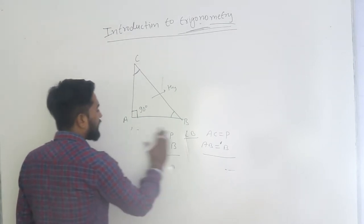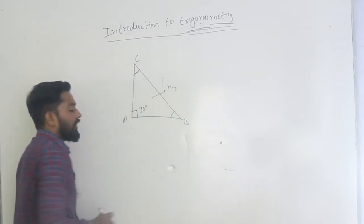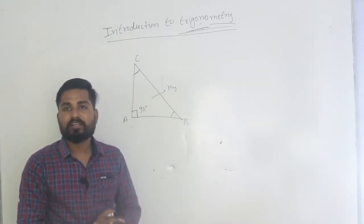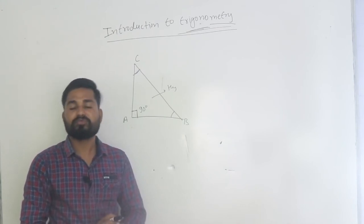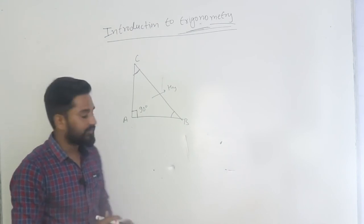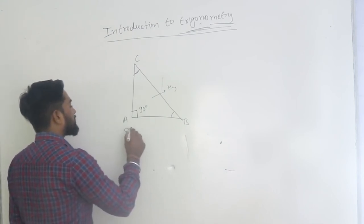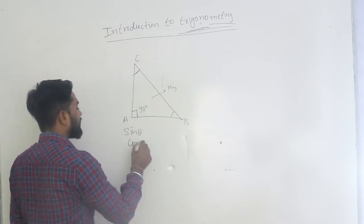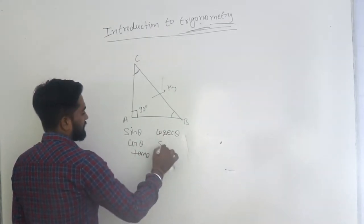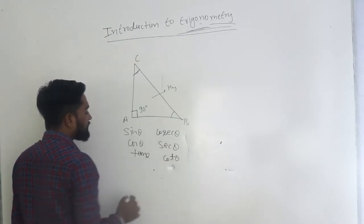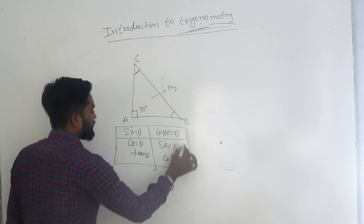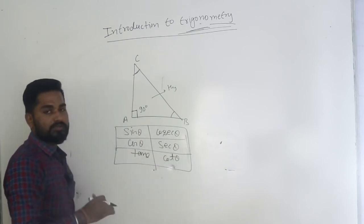In trigonometry, we relate the angles and sides of a right angle triangle using six trigonometric ratios. These are: sin theta, cos theta, tan theta, cosec theta, sec theta, and cot theta. You have to know about these values.